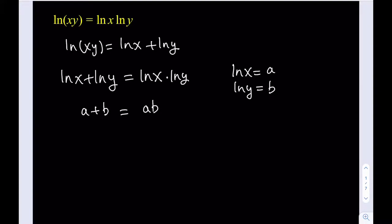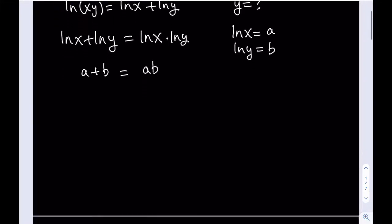Now our goal is to solve for y here. So we're wondering what y is going to equal in terms of x. So that means we need to solve for b. Let's go ahead and subtract b from both sides to collect all the b terms on the same side. And then we'll use factoring. b times the quantity a minus 1 is equal to a. And then divide both sides by a minus 1. And we get b equals a over a minus 1.